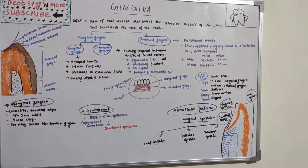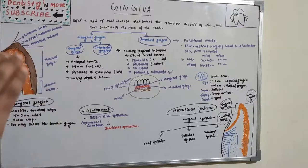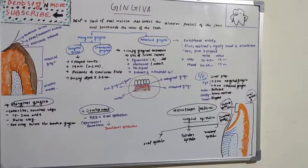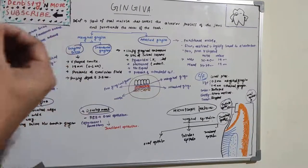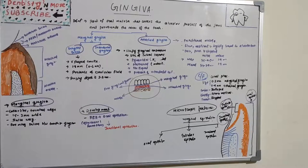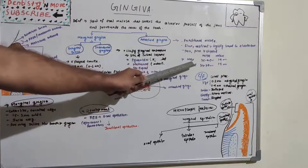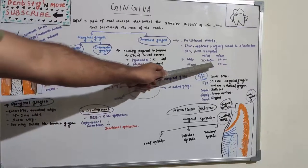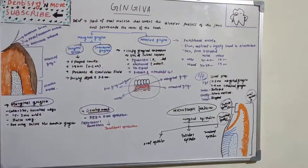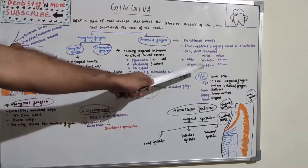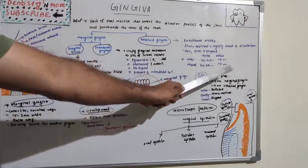Attached gingiva is functional mucosa which is very firm, resilient and tightly bound, pale pink and stippled. Stippling is the alternate protuberances seen on the gingival surface, giving it an orange peel appearance. The epithelium and connective tissue interdigitation gives that particular stippled appearance. Stippling is a good sign for gingiva, and if stippling is absent there is some pathology involved. In the maxillary incisal region it ranges between 3.5 to 4.5 mm, molar is 1.9 mm, mandibular region 3.3 to 3.9 mm, and mandibular molar 1.8 mm.